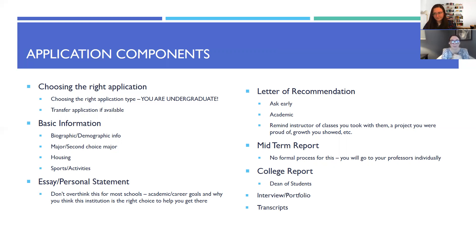Basic information is found across the board: biographic and demographic information, your major, possibly second choice options, housing preferences such as whether you're looking to live on campus or off campus, and any sports or activities you're interested in joining at their college.